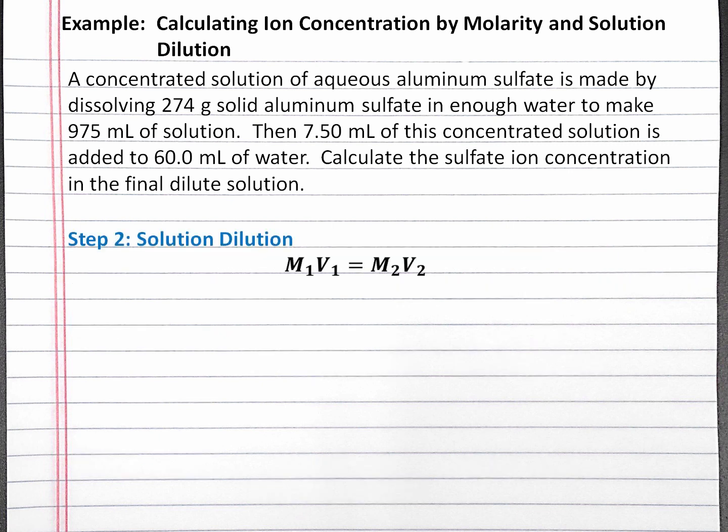Our next step is a solution dilution problem. We're going to dilute 7.5 milliliters of this concentrated solution with 60 milliliters of water. For solution dilution, we can use the equation M1V1 equals M2V2. Solving for M2, or the concentration of our dilute solution, it equals M1V1 divided by V2.